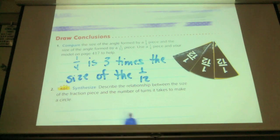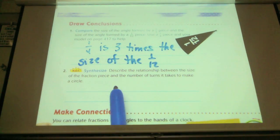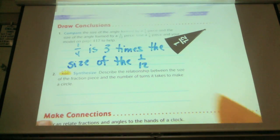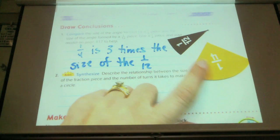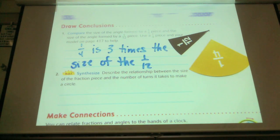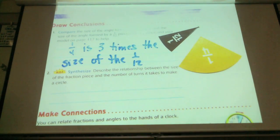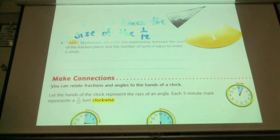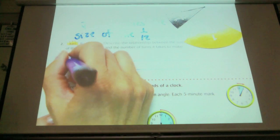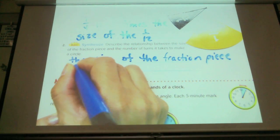Describe the relationship between the size of the fraction piece and the number of turns it takes to make a circle. With twelfths we needed twelve. How many fourths make a circle? Four. The size of the fraction piece equals the number of turns it needs to get around the circle. Whatever the size of the fraction piece, that's how many times you'll need.